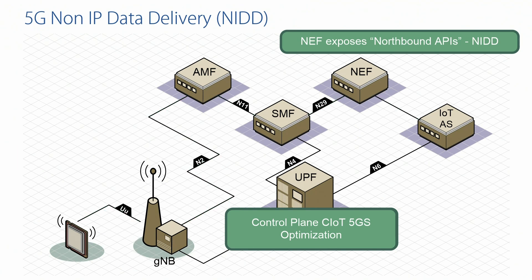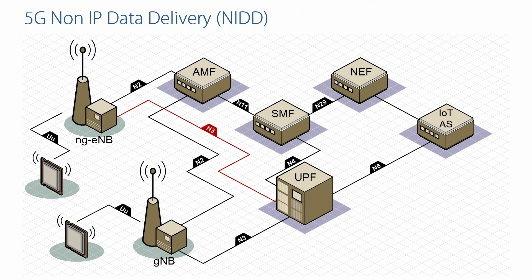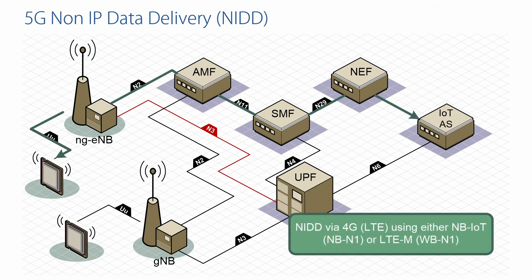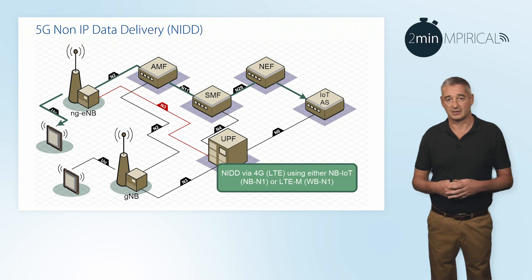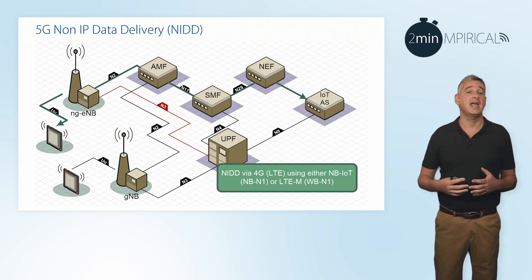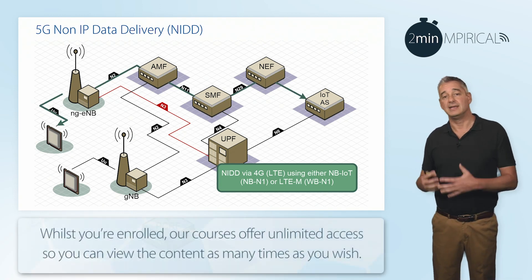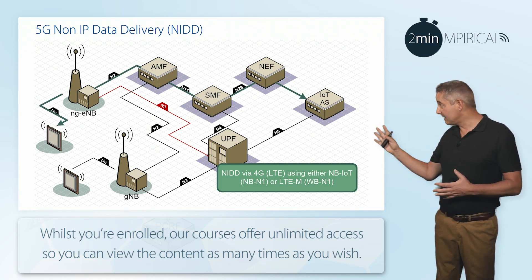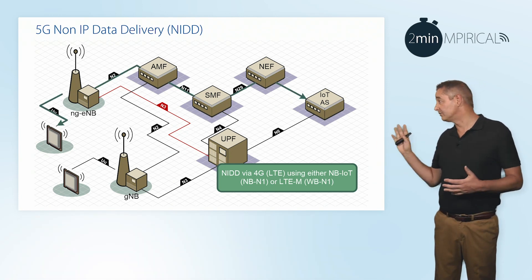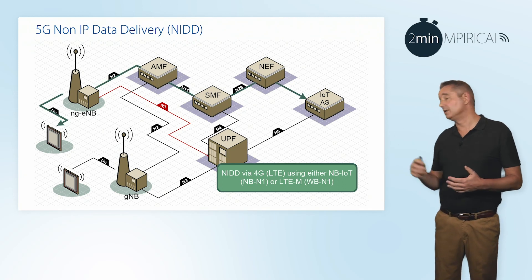NIDD is not only going to be specific to 5G. Here on the diagram we have added a 4G radio, which is connecting back into the 5G core. We can see the non-IP data leaving the IoT application server and travelling via the NEF to the SMF, the AMF, and down in this case to our 4G radio, the ng-eNodeB, and specifically across the 4G air interface. This is particularly important because it now means we can maintain narrowband IoT and LTE-M, two radio enhancements to our 4G system to support cellular IoT, plugging back into our 5G core.